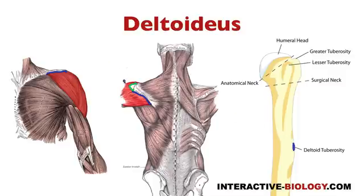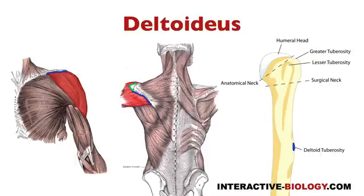When you look at the structure or the makeup of this muscle, you'll see that it's almost like three separate muscles, but there are three portions — three regions of this muscle. We have the anterior or clavicular section, we have the lateral or the acromial part in this region here, and then on the back we have the posterior or spinal section.